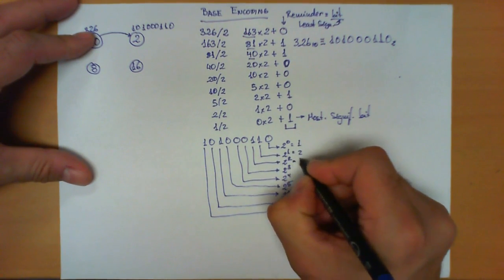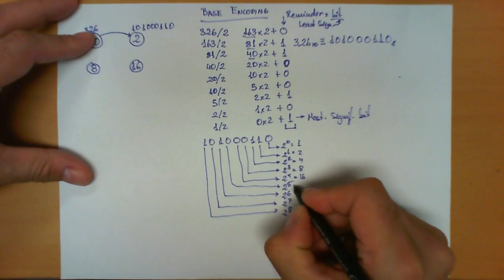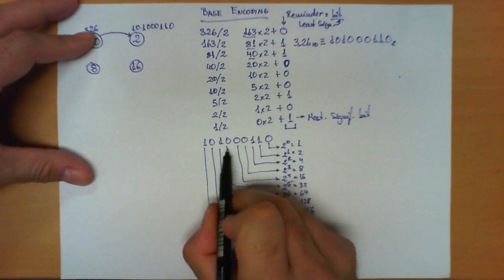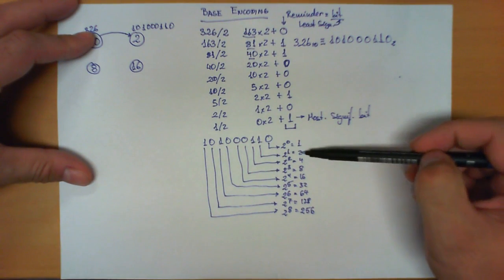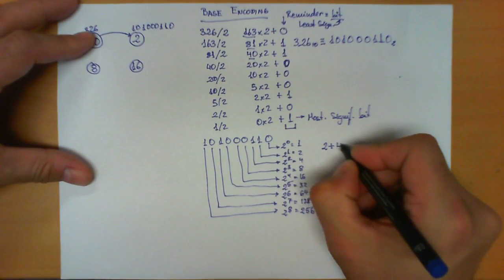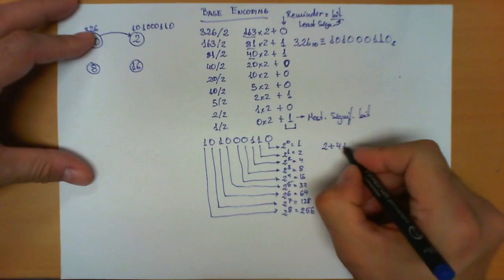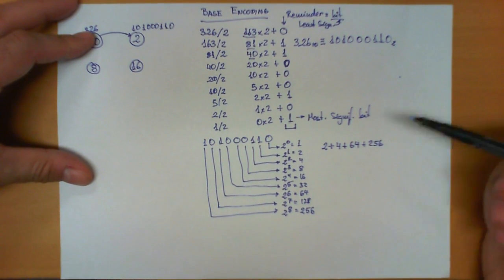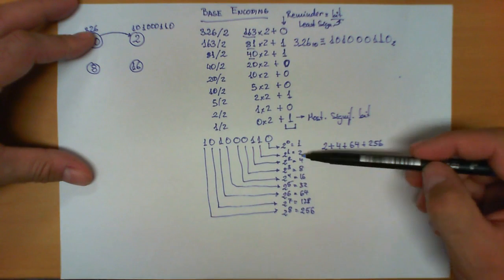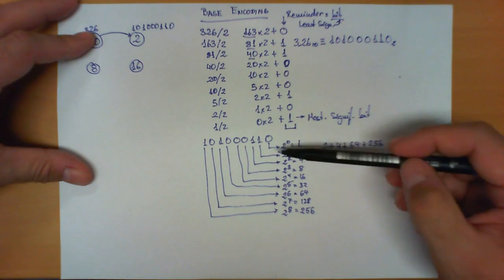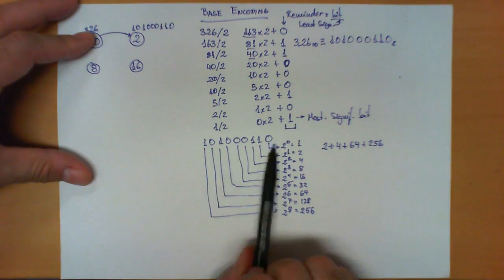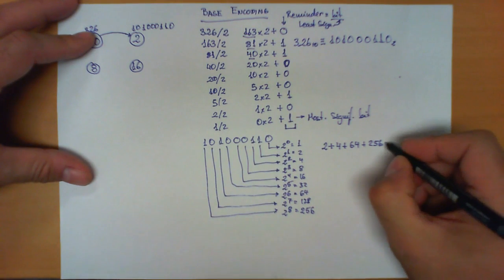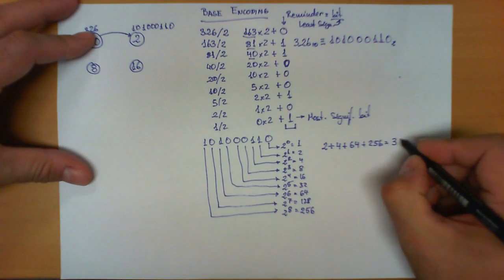The weights for our binary number are 1, 2, 4, 8, 16, 32, 64, 128, and 256. We only need to worry about the digits equal to 1: weights 2 and 4 give 2 plus 4; then weight 64; and then 256. Once we write these powers and add only those with a corresponding digit equal to 1 — in this encoding we have digits with weights 2, 4, 64, and 256 — performing this addition gives us 326 again.